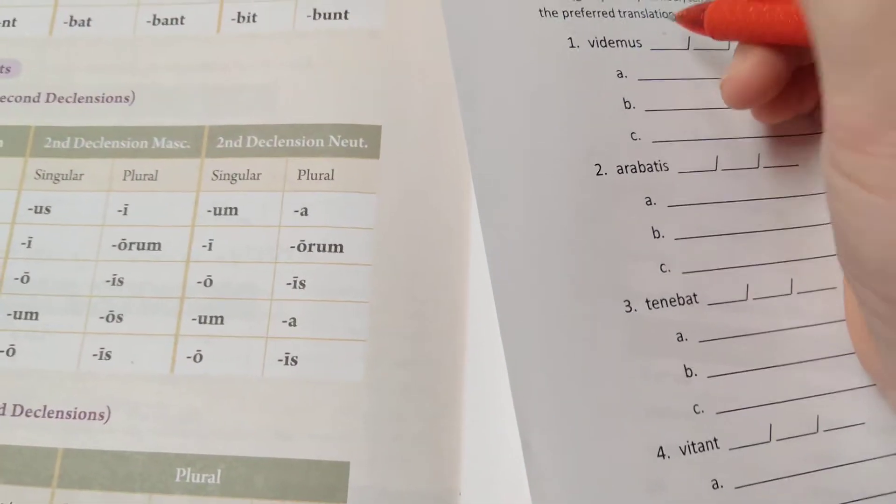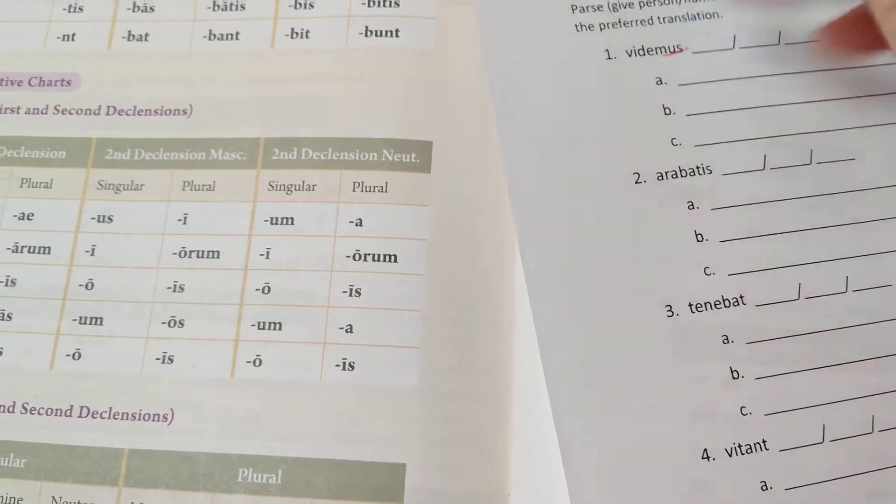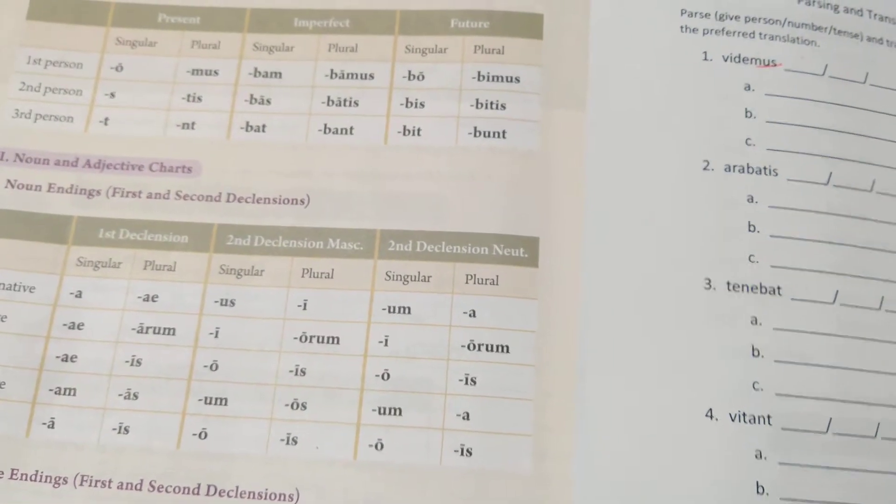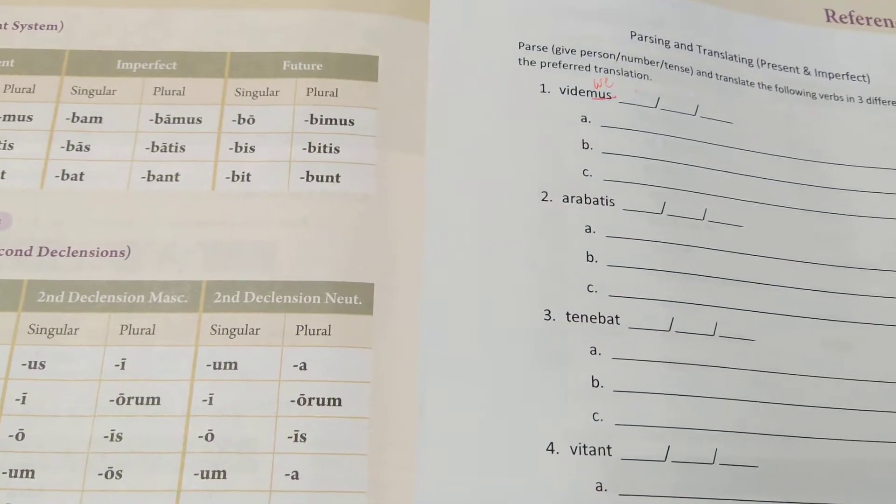That's from our O, O means I, S means only you, T means he, she, it. Then we're through -mus, which means we. So you can just jot down that -mus means we.